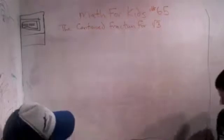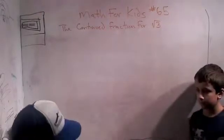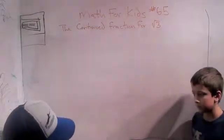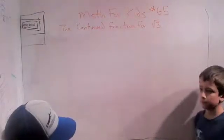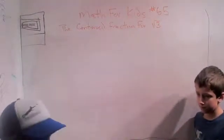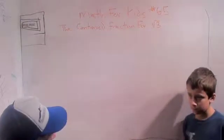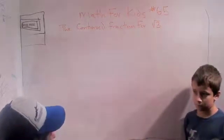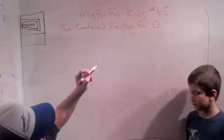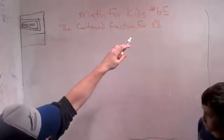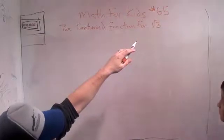Good evening. Welcome to Math for Kids number 65. This is the third in a series of videos about solving Pell's equation, and we're talking about continued fractions for square roots. So if you want to go back to the beginning, it's Math for Kids number 63.